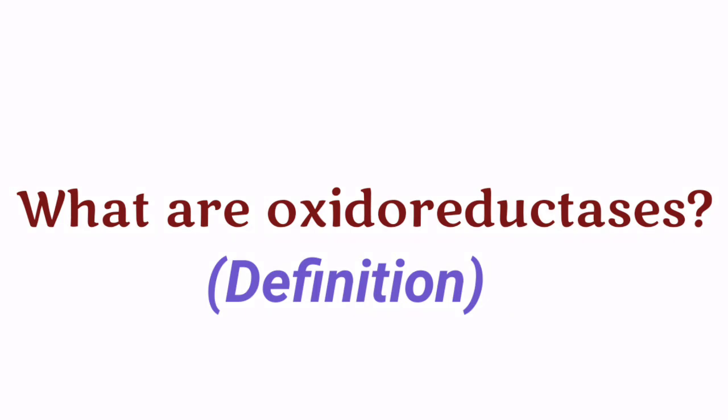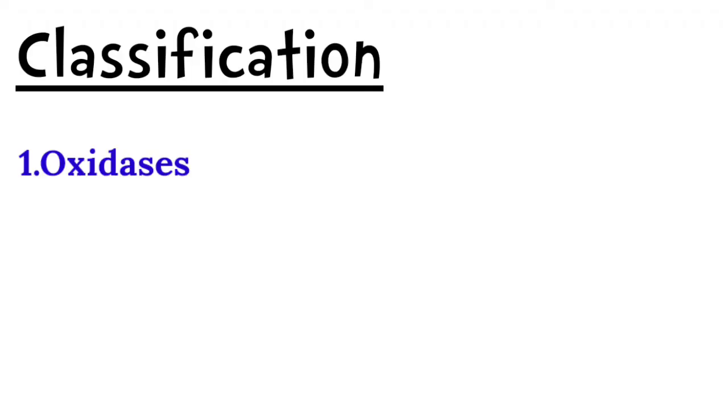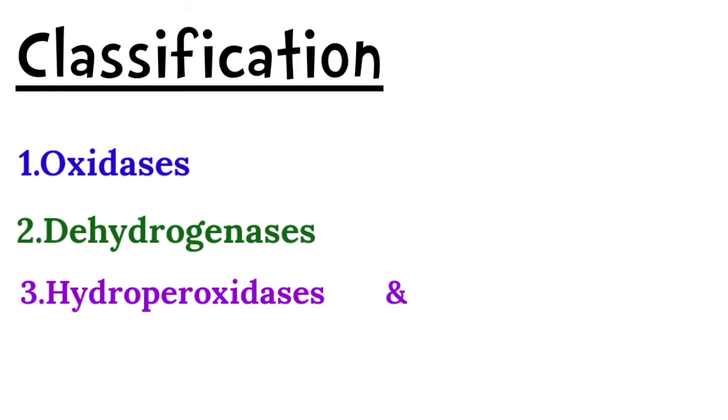So chemically, oxidation is the removal of electrons and reduction is the gain of electrons. These oxidoreductases are classified into 4 groups: oxidases, dehydrogenases, hydroperoxidases, and oxygenases. Now we will see in detail about each group of oxidoreductases.